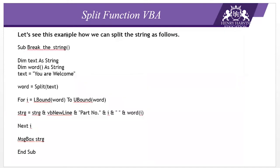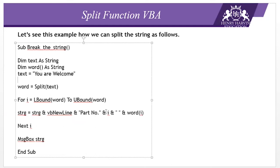Looking at this example: the string is 'you are welcome'. If we split by the newline character (vbNewLine), we get 'you' on the first line, 'are' on the second line, and 'welcome' on the third line. This shows how the string can be broken apart.